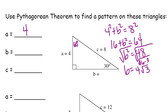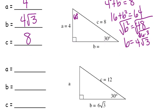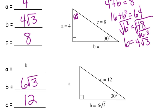So this side is 4, this is 4 radical 3, and this one was 8. I would like you to do this one all by yourself: figure out what A is. We know that B is 6 radical 3, and we know that C is 12. Please come back when you have your answer. You should have gotten that A equals 6.